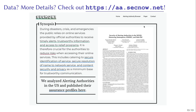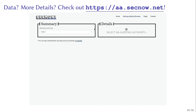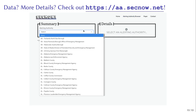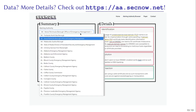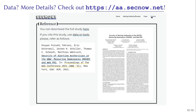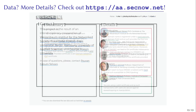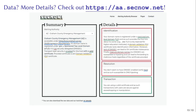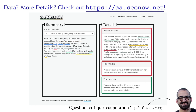If you're interested in our work, if you want the raw data, more details, or to go through the assurance profiles of all the alerting authorities we examined, you can check out our website at aa.secnow.net. If you have any questions, critique, or want to work with us, you can drop me a line at pfd.acm.org.